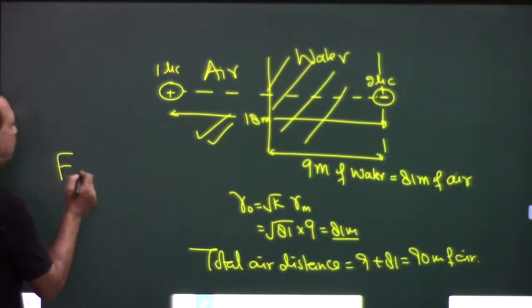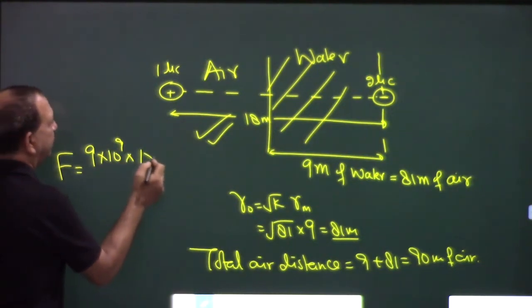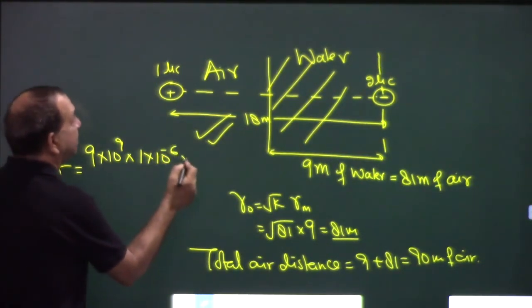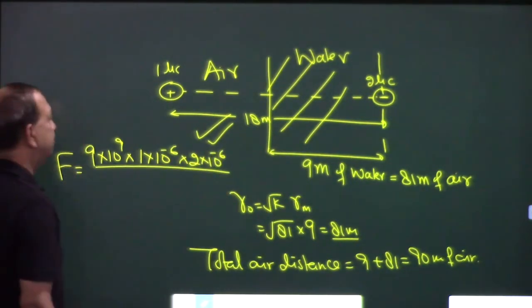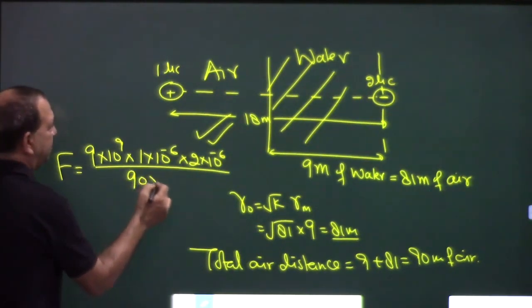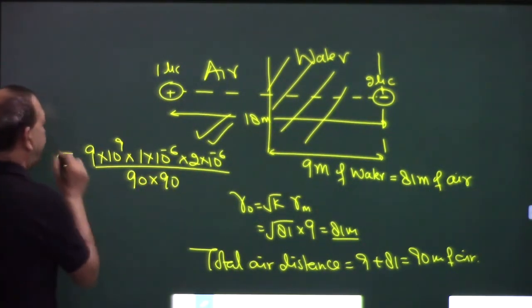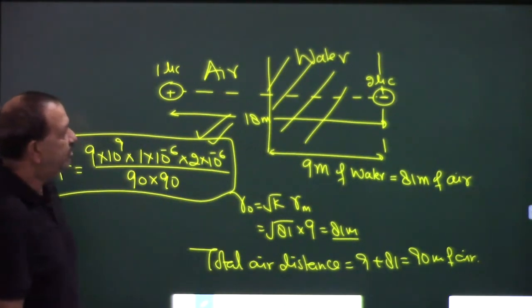So what will be the force? 9 into 10 to the power 9 into 1 into 10 to the power minus 6 into 2 into 10 to the power minus 6 upon r square. R is what, 90 into 90. Let us not waste time further.